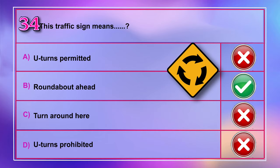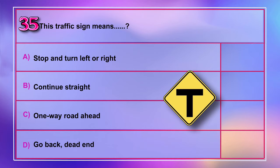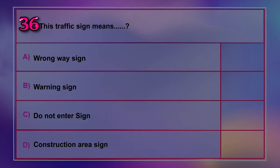Question number 35: This traffic sign means A) stop and turn left or right, B) continue straight, C) one-way road ahead, D) go back — dead end. Correct answer is A: stop and turn left or right.